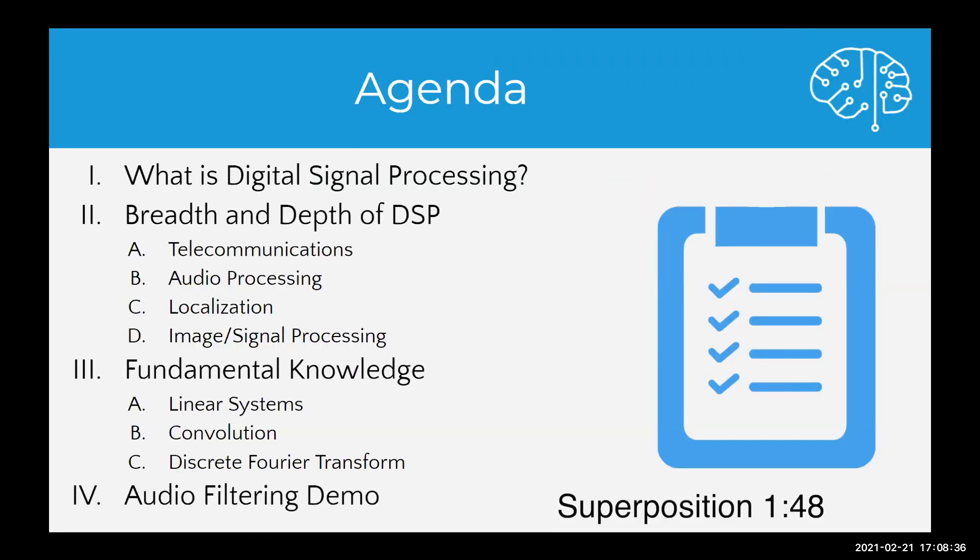Here's the layout for the workshop. We're first going to start out with talking about what digital signal processing is. Then we're going to talk about the breadth and depth of DSP, including telecommunications, audio processing, localization, and image and signal processing. Then we'll go into the fundamental knowledge topics. Here's where we will dive more into linear systems, convolution, and discrete Fourier transforms. And then finally, we'll end the workshop with a demonstration on audio filter.